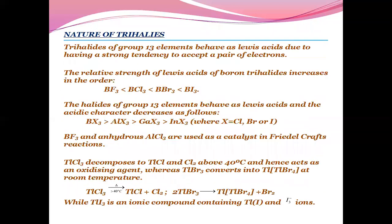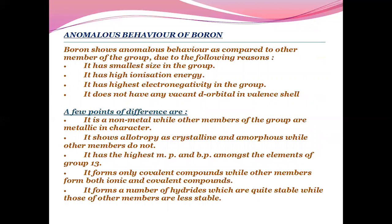Let us talk about the anomalous behavior of boron. Boron shows anomalous behavior compared to other members of the group due to the following reasons: it has smaller size in the group, it has high ionization energy, it has highest electronegativity in the group, it does not have any vacant d-orbital in the valence shell. A few points of differences are: it is non-metal while other members are metallic in nature. It shows allotropy as crystalline and amorphous while other members do not. It has the highest melting and boiling point among the elements of the group. It forms only covalent compounds while other members form both ionic and covalent compounds. It forms a number of hydrides which are quite stable while those of other members are less stable.